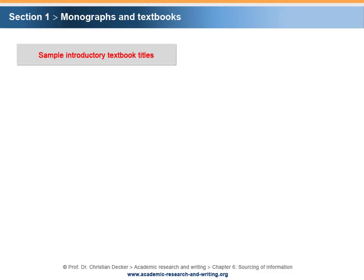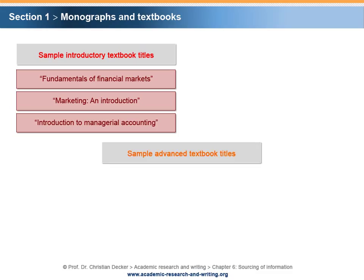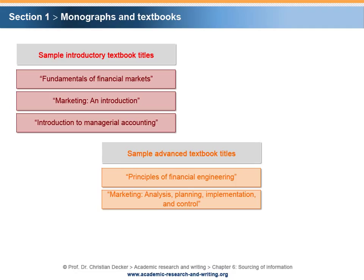An initial indicator of whether or not a textbook is suitable as a reference within a research paper may be its title. Example textbook titles signalling an introductory character could be Fundamentals of Financial Markets, Marketing: An Introduction, or Introduction to Managerial Accounting. Titles which suggest a more advanced and comprehensive approach to the subject might indicate the more advanced nature of a textbook. Examples could be Principles of Financial Engineering, Marketing: Analysis, Planning, Implementation and Control, or Managerial Accounting.